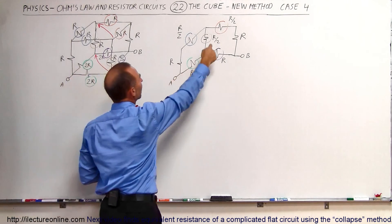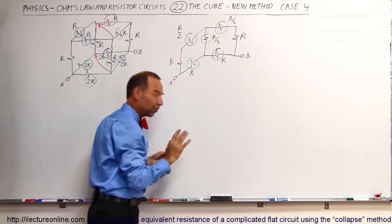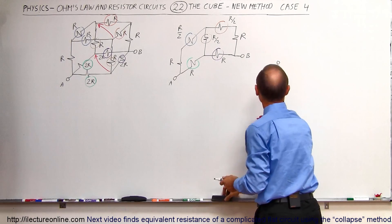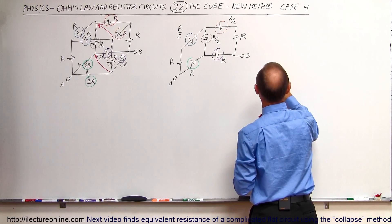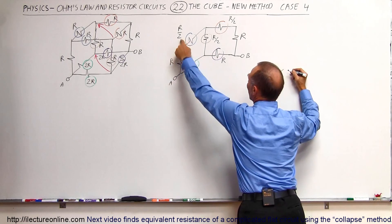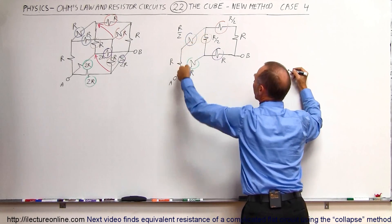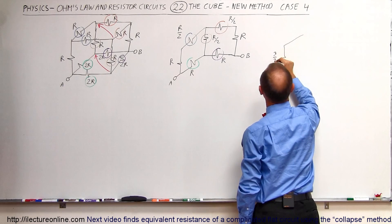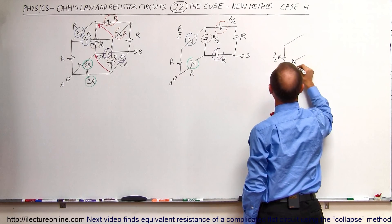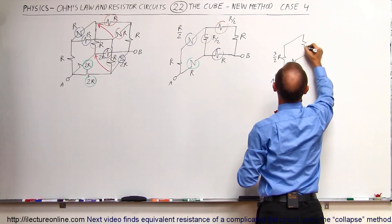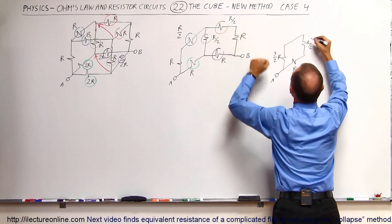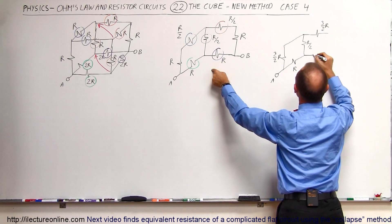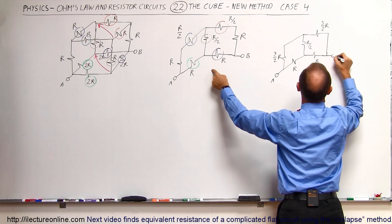There's one more difficulty. We can simplify it further by collapsing two series resistors together. From point A, a half R plus an R is three-halves R, so we turn that into a single 3/2R resistor. This resistor is still there as an R resistor, and this resistor is still there as an R/2 resistor. These two can be combined to form a single 3/2R resistor, and this one is still there as a 1R resistor, coming together at point B.